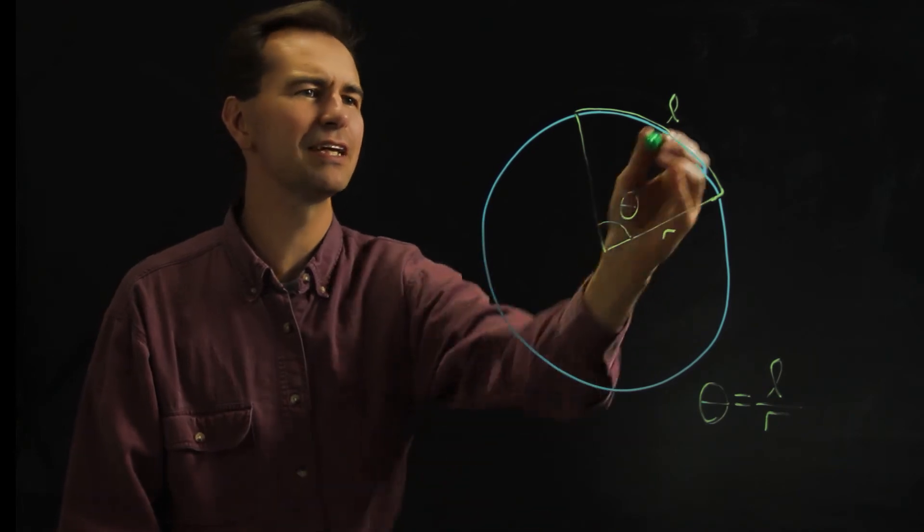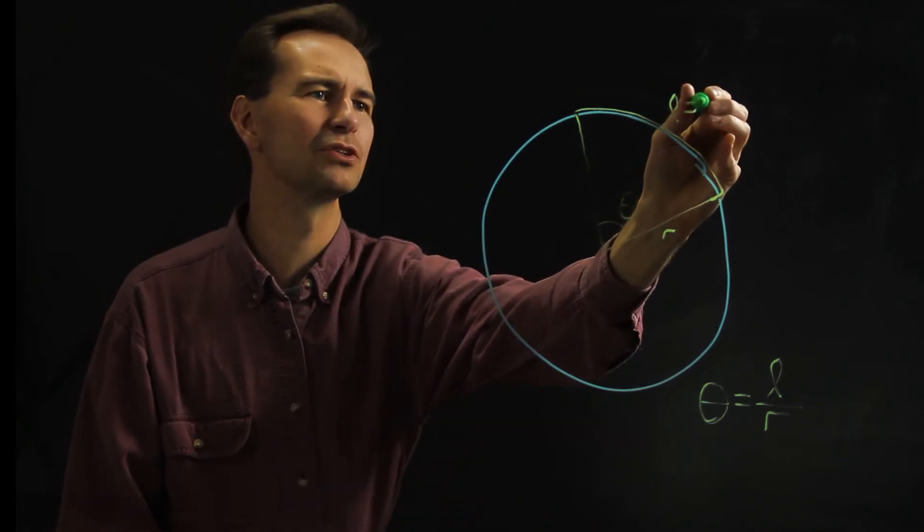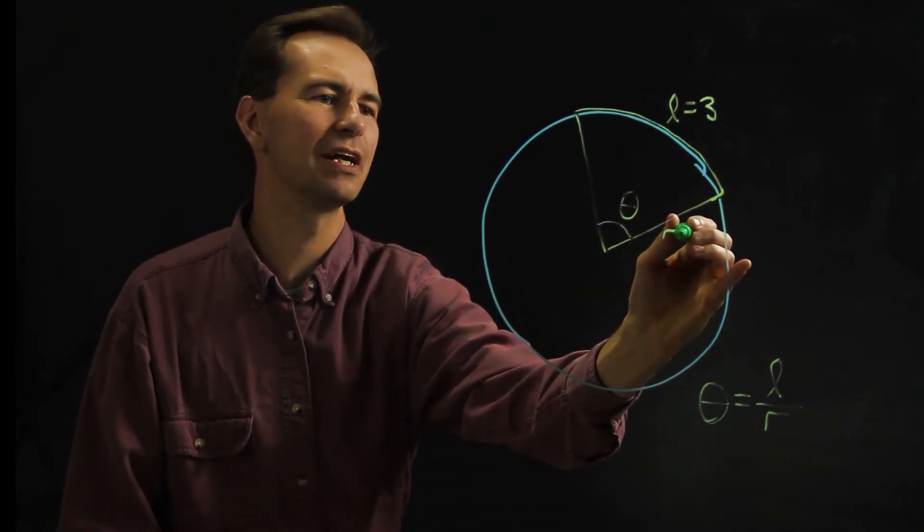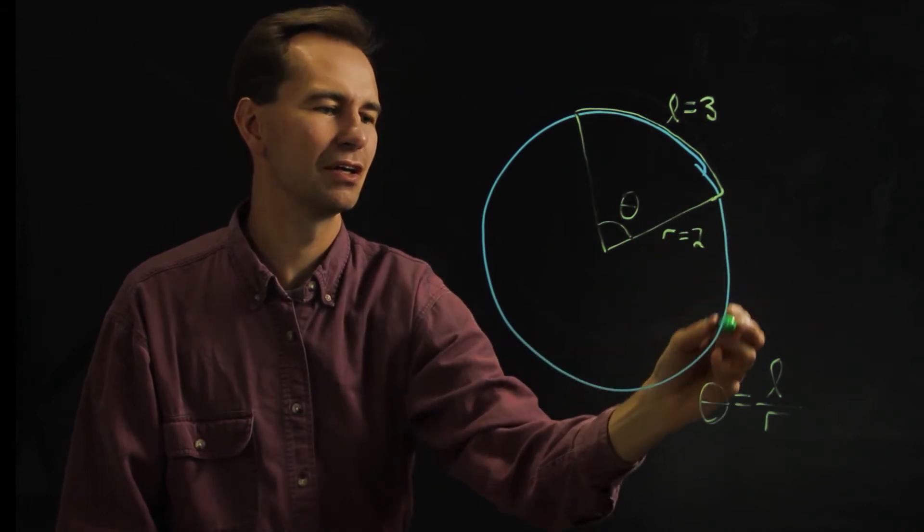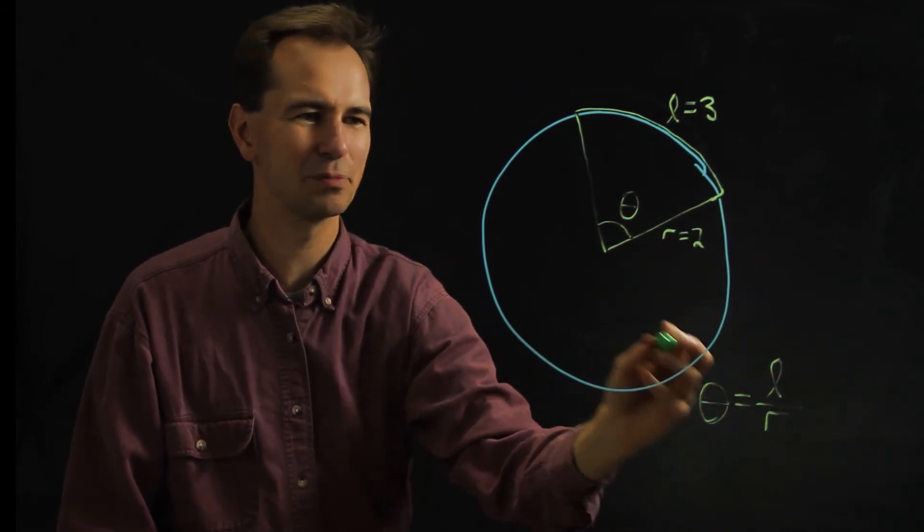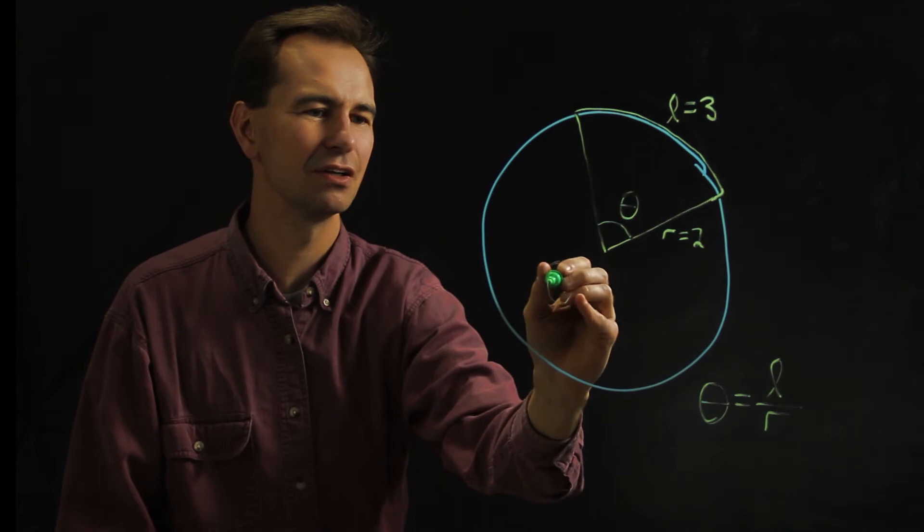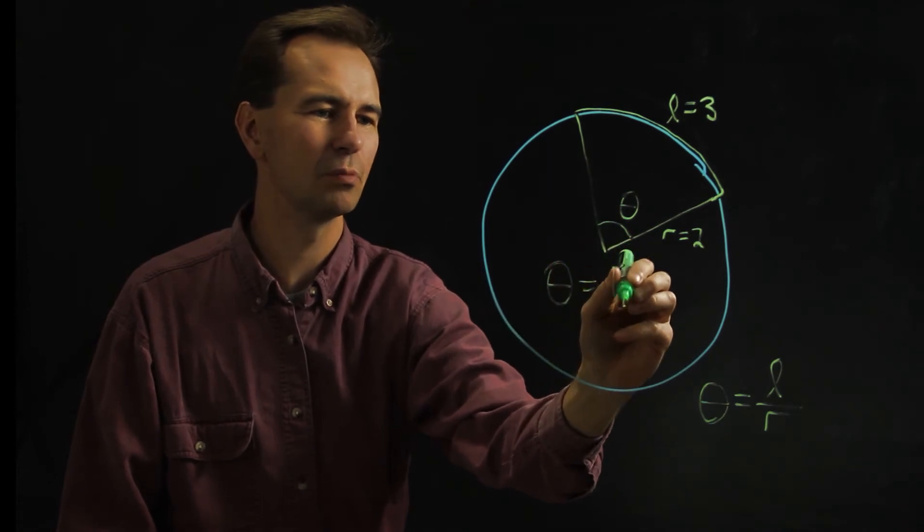For example, let's say that the length of the arc was 3 and that the radius was 2. Based on this formula, the angle would be 1.5.